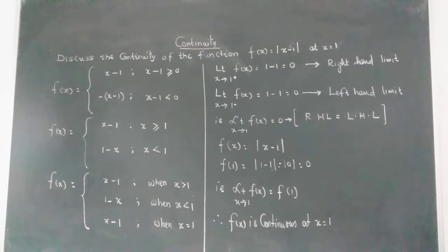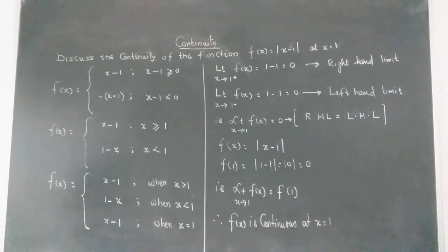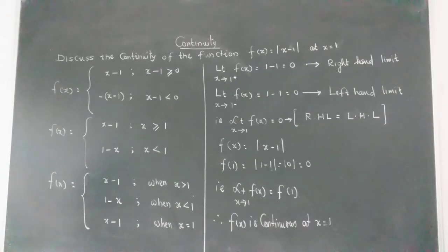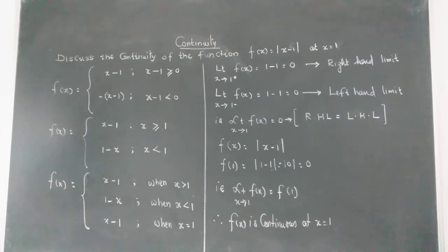Let's read this question: Discuss the continuity of the function f(x) = |x − 1| at x = 1. Last year we have seen that f(x) equal to modulus of a function has a special name — that is modulus function. F(x) is a modulus function because there is a modulus symbol. We need to check its continuity at the point x = 1.